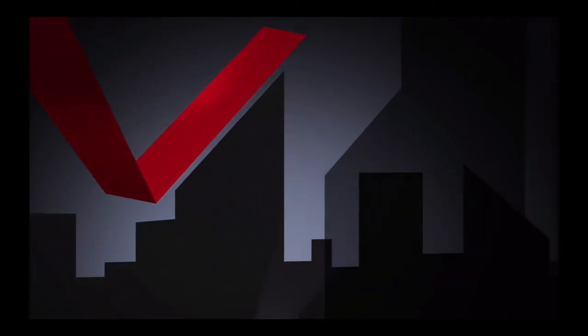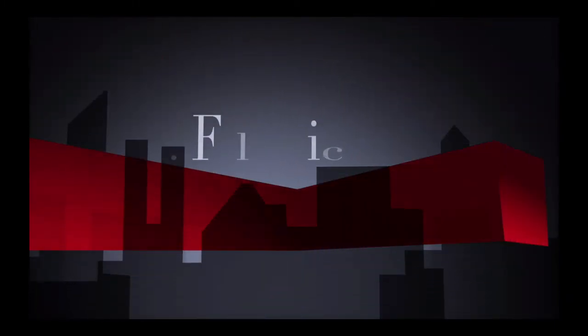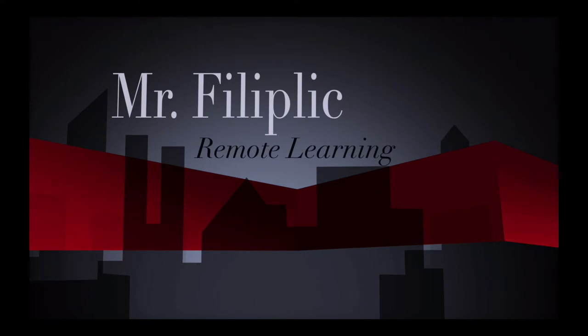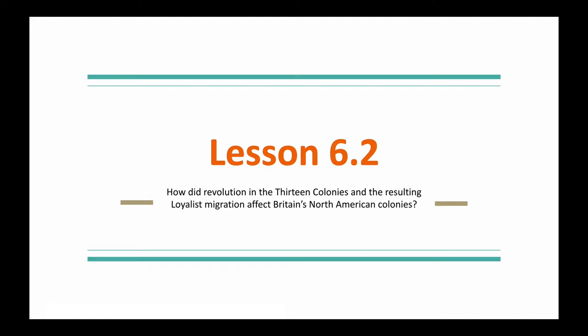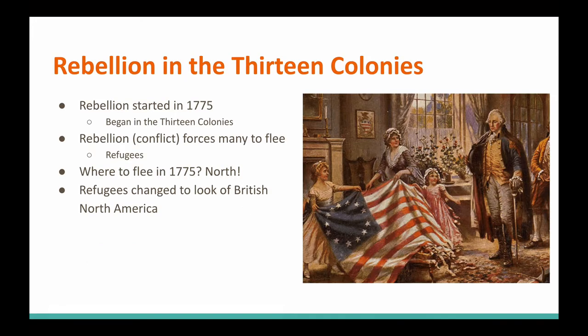Lesson 6.2: Rebellion in the 13 Colonies. How did revolution in the 13 colonies and the resulting loyalist migration after Britain's North American colonies affect our Canadian identity? This lesson is all about the rebellion in the 13 colonies, which started in 1775. Obviously, this began in the 13 colonies, which we've learned about in previous chapters.